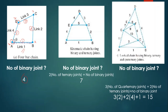For example two, point A has one binary joint, point B has one binary joint, and point D has one binary joint — so binary joints equal three. At points C and E there are two ternary joints. Two ternary joints convert to two times two equals four binary joints. So three plus four equals seven binary joints total.